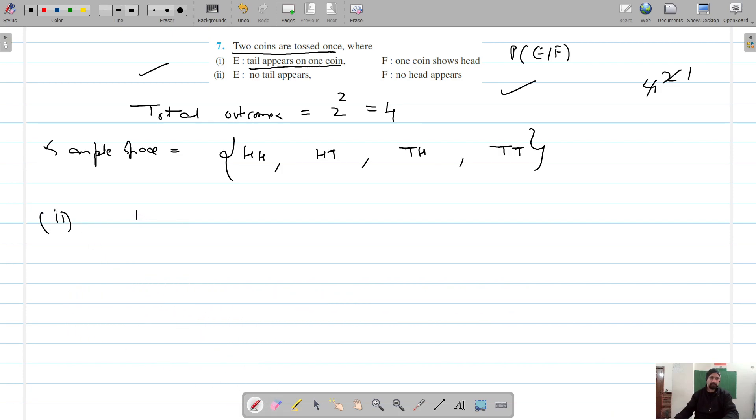In the second part, event E is no tail appears (which is HH), and event F is no head appears (which is TT). We don't have anything in common here, so probability of E intersection F is zero.